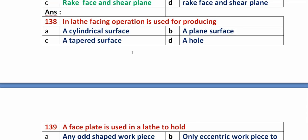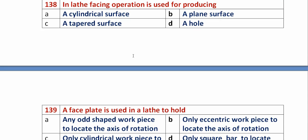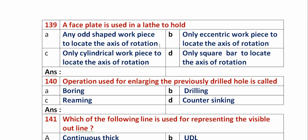Question 138: In a lathe, facing operation is used for producing? Option A: cylindrical surface. Option B: plane surface. Option C: tapered surface. Option D: a hole. Facing is used to produce a plane surface. So option B, plane surface, is the right answer.